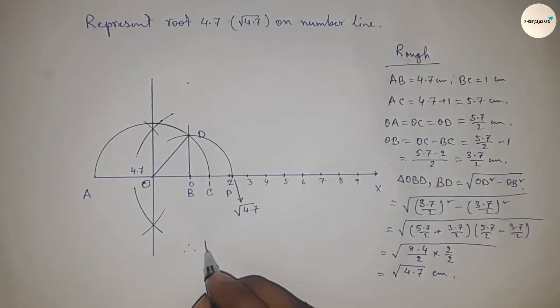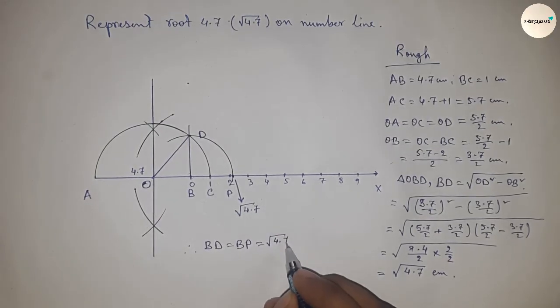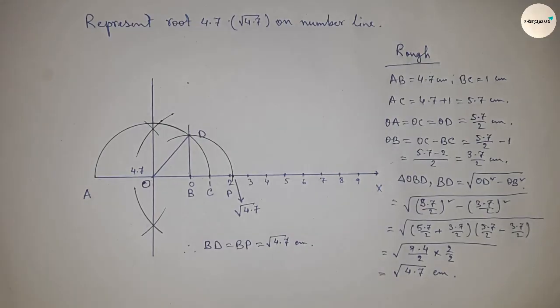Therefore, the distance BD and BP are equal to root 4.7 centimeters. That's all, thanks for watching. Please subscribe, like, and comment.